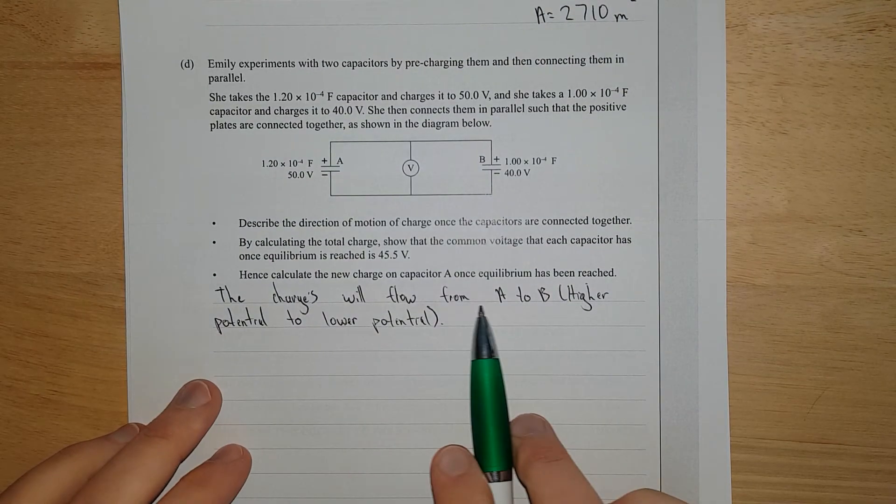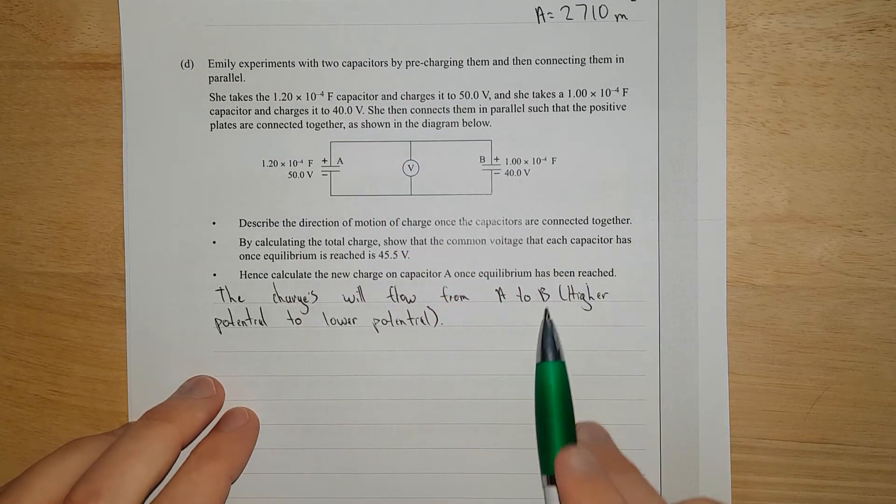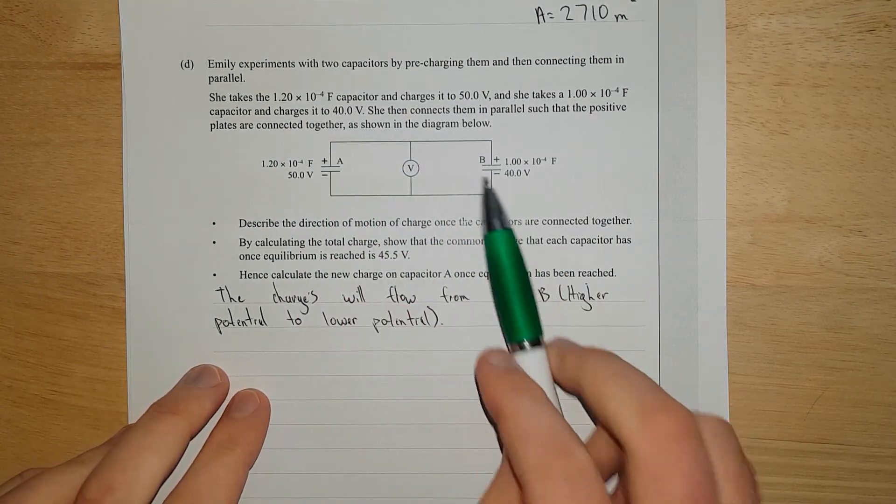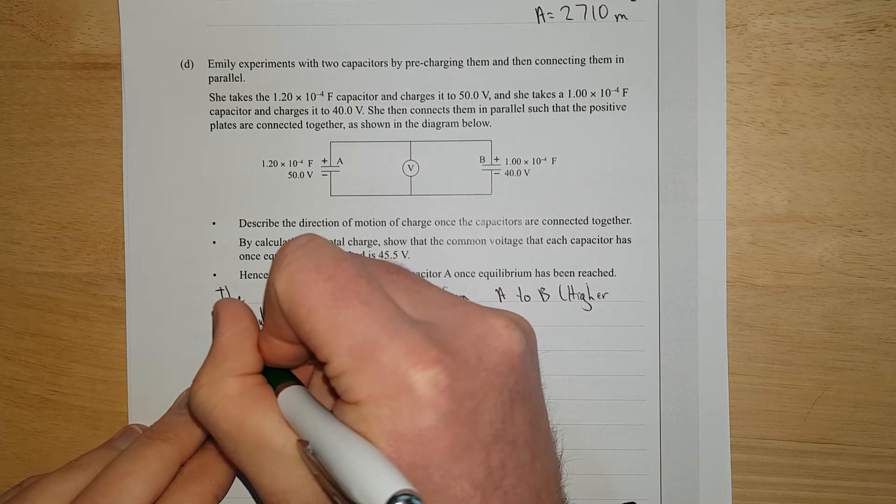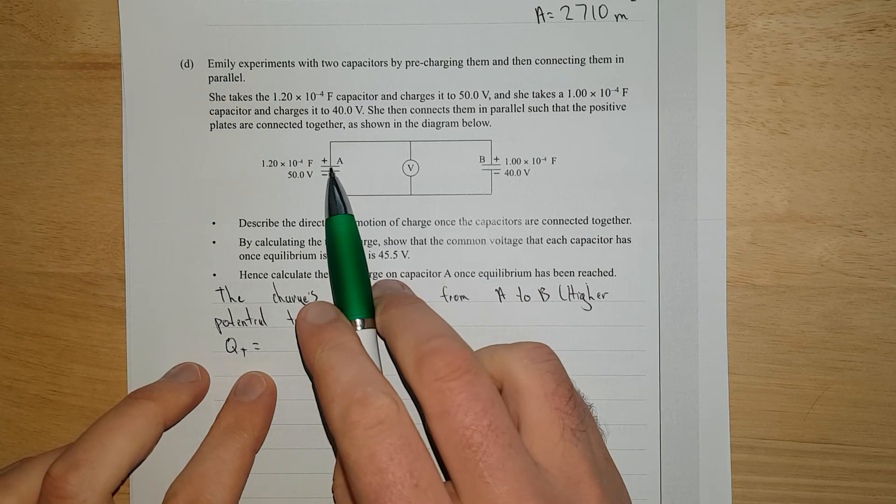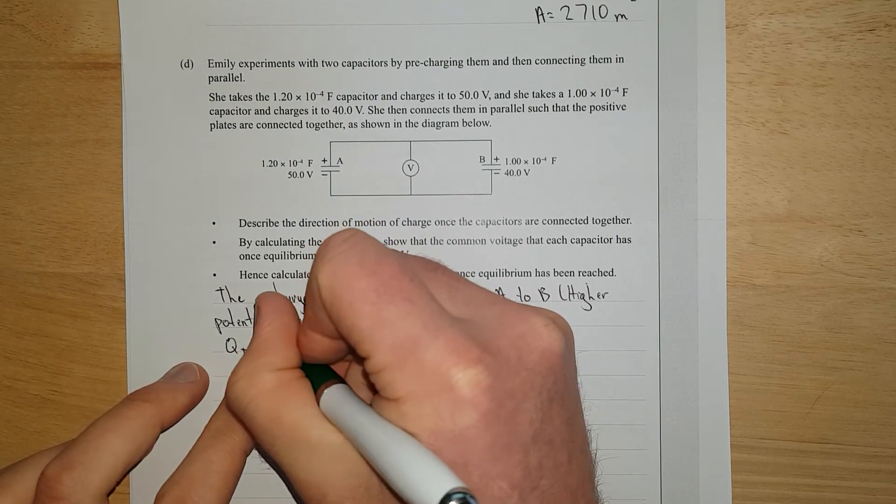I've said the charges will flow from A to B, higher potential to lower potential. Because this is 50 volts, it's going to dominate that one there. Next, we're going to find Q total. That equals QA plus QB.